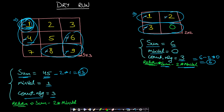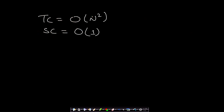We traverse the entire matrix exactly once, and the matrix dimension is n by n. Therefore the time complexity is O(n²) and the space complexity is O(1).